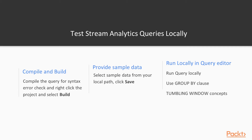To test Stream Analytics queries locally, there are multiple steps: compile and build the query to check for syntax errors by right-clicking the project and selecting Build. You can also provide sample data and run the query locally in the Visual Studio query editor. Alternatively, after submitting the job to the Azure portal, you can test it through the Azure portal itself.